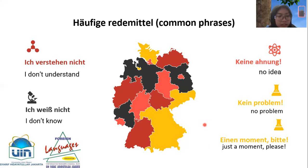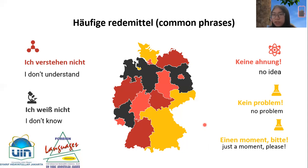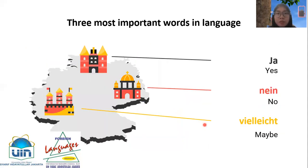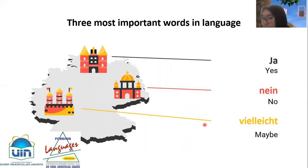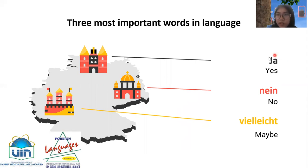Next, 'Einen Moment bitte', meaning 'just a moment please' or 'wait a second'. Now for the three most important words in the language. If there's a yes-or-no question, we can answer with yes or no.